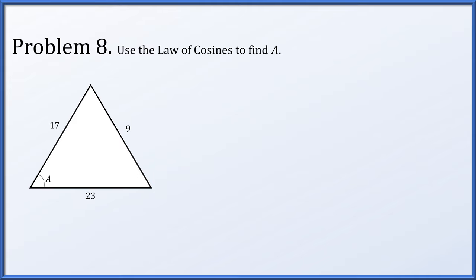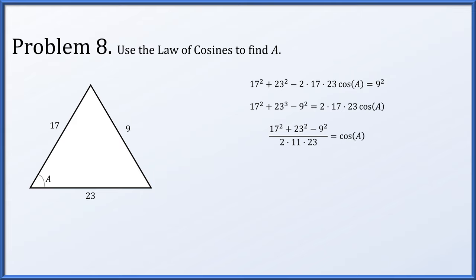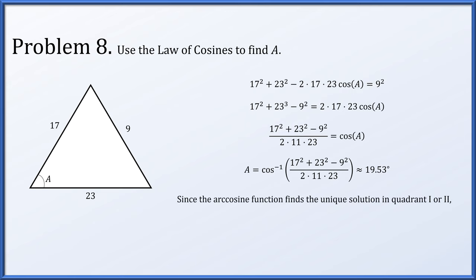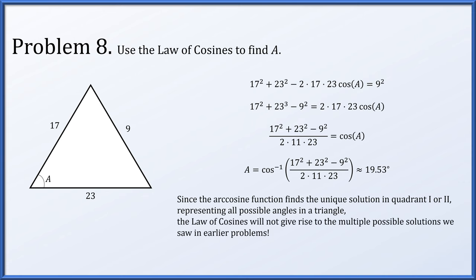Problem eight: use the law of cosines to find angle A. Setting up: 17 squared plus 23 squared minus 2 times 17 times 23 times cosine A equals 9 squared. Rearranging allows us to solve for cosine A, and then A is simply the arccosine of that expression, which works out to about 19.53 degrees. Notably, the arccosine function has range 0 to pi — exactly representing angles that might be in a triangle, 0 to 180 degrees — so the law of cosines does not give rise to the ambiguity that the law of sines did.